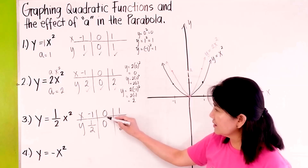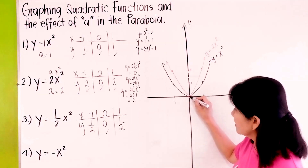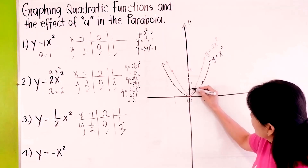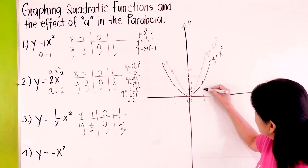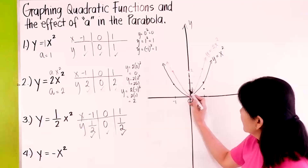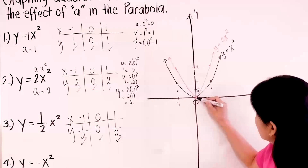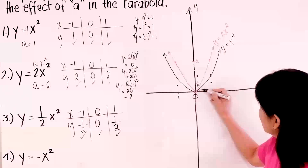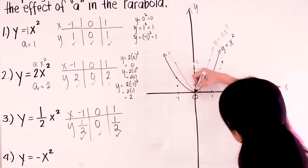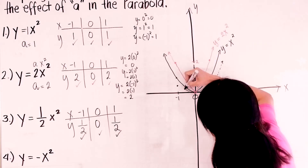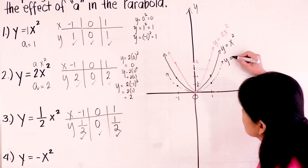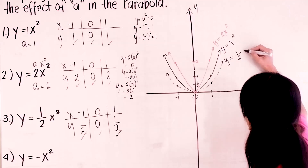Let's plot the points again. (0, 0) is still at the origin. (1, 1 half) — this is 1, and 1 half will be somewhere here. Then negative 1, 1 half will be here. If you take a look at the parabola, I will now use a dotted line so that you can see the difference. This is y equals 1 half x squared.